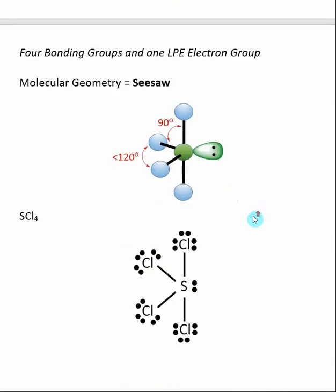When we have five groups of electrons, four bonding and one lone pair, we have a molecular geometry called seesaw. One of the bonds has been replaced by a lone pair electron. An example is SCl4. The bond angles for the central equatorial atoms are slightly less than 120 degrees because the lone pair electrons push against them, while the bond angles between the axial and central atoms remain at 90 degrees.